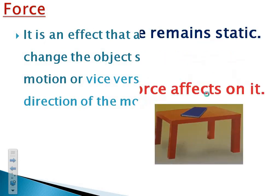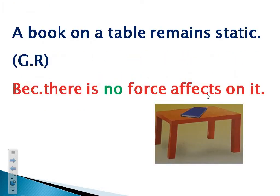Here I have three give-reason questions, which are very simple and easy. Number one: a book on the table remains static — means it doesn't move. Why? Of course, because there is no effect on it, because there is no force acting on it.